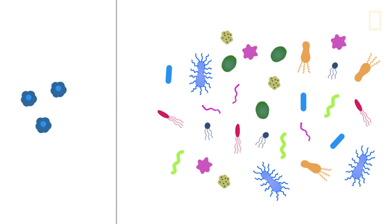These microbes outnumber our own human eukaryotic cells 10 to 1. This actually means not 10 times the amount of genes, but it turns out that for every human gene that we have, there are over 360 bacterial genes. So they outnumber our own human genomes.